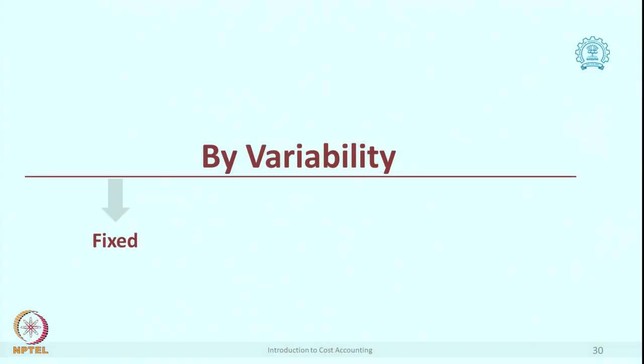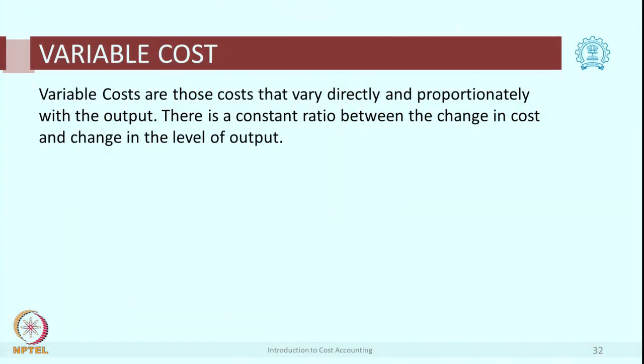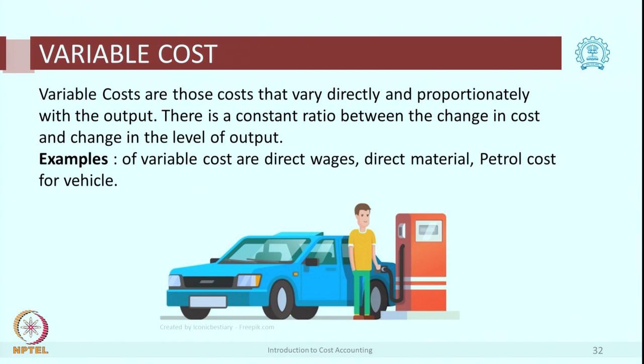The next classification is as per variability. Here the base of classification is slightly different. The earlier classifications were mainly for cost control purposes. Classification as per variability is mainly useful for decision-making purposes. The cost is classified into fixed, variable, and semi-variable. Variable costs are those costs which change or vary — specifically, they vary as per the level of output. More the usage or more the production, that cost goes up in linear proportion — that is called a variable cost. Examples are direct wages and direct materials.